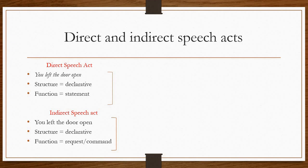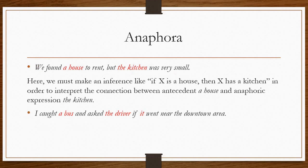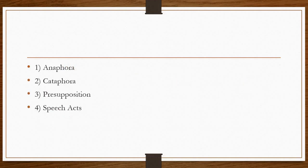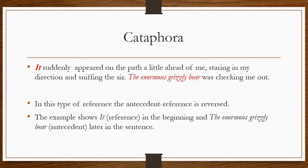To recap today's topics: first, anaphoric reference or anaphora — when we refer back to something, like 'it' referring to 'a puppy.' The earlier noun is the antecedent and the referring word is the anaphoric expression. Then cataphora, which is the reverse — instead of referring back, the reference moves forward, like 'it' referring to 'the enormously grizzly bear' later in the sentence.